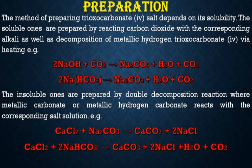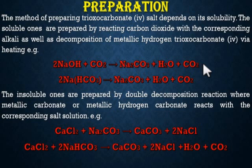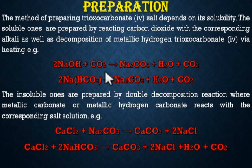The method of preparing trioxyl carbonate 4 salt depends on its solubility. The soluble ones are prepared by reacting carbon dioxide with the corresponding alkali and soluble bases, as well as by decomposition of metallic hydrogen trioxyl carbonate 4 via heating. For example, sodium hydroxide combined with carbon dioxide gives sodium trioxyl carbonate 4, water, and carbon dioxide. Another method is the decomposition of sodium hydrogen trioxyl carbonate 4, which gives sodium trioxyl carbonate 4, water, and carbon dioxide.